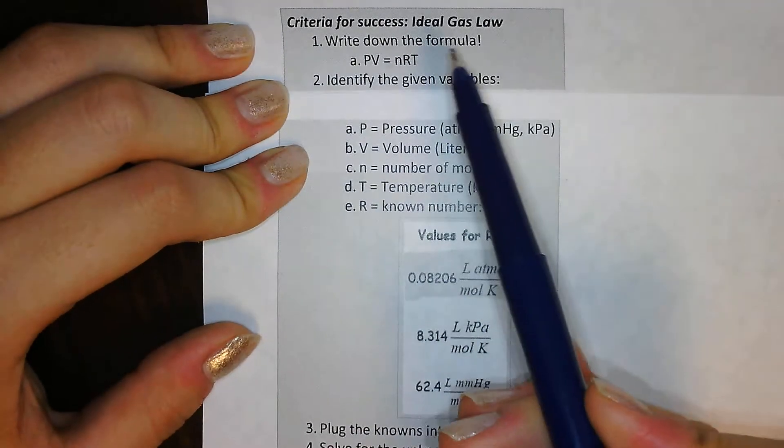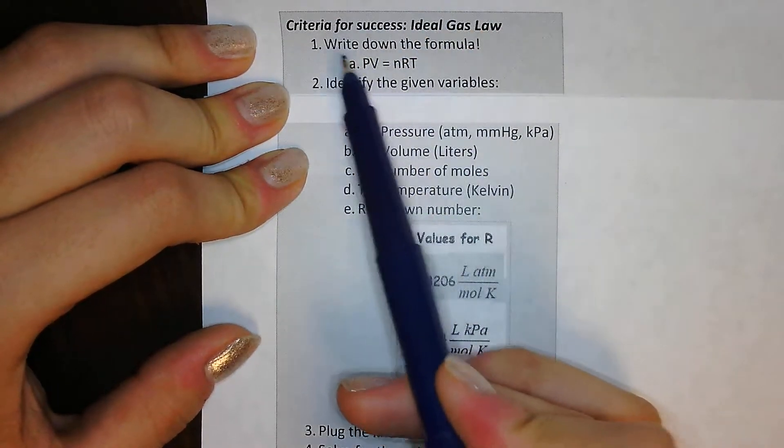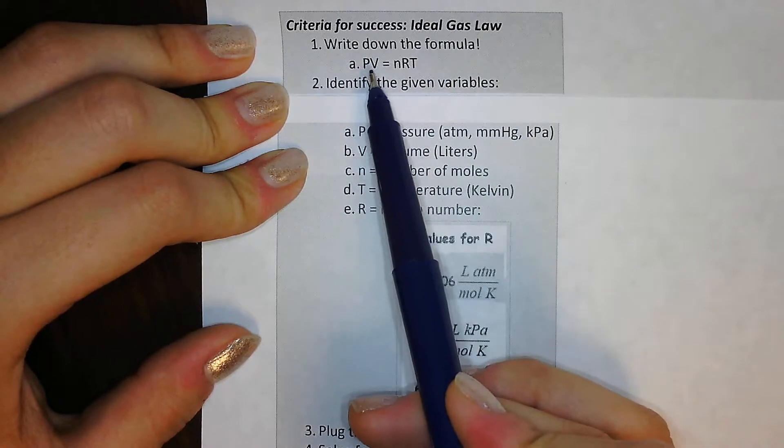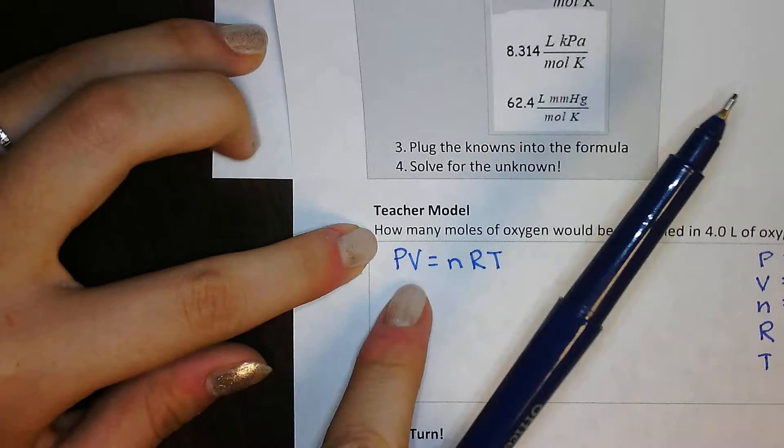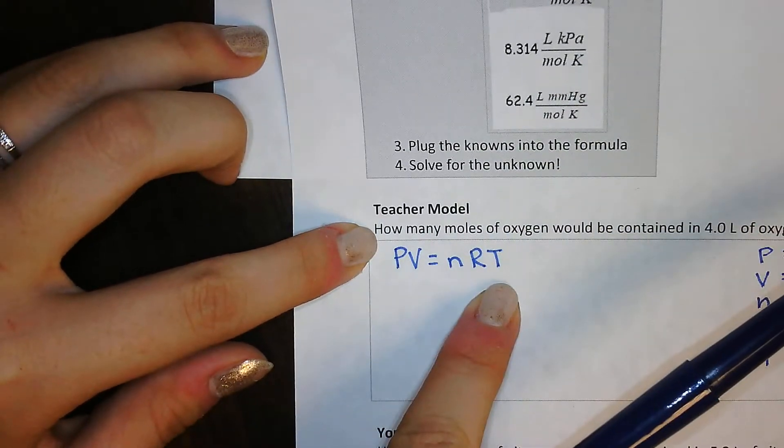Okay, so for any problem with the ideal gas law, the first thing I need to do is write down the formula. So PV is equal to nRT. I've already gone and done this. PV is equal to nRT.